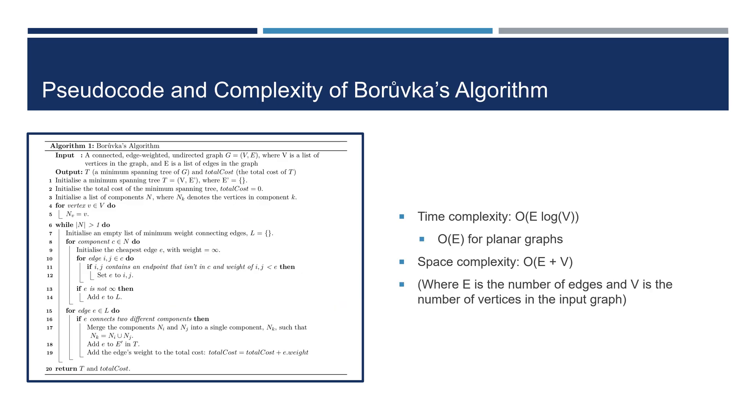Borůvka's algorithm has a time complexity of O(E log V). The outer while loop runs for log V iterations, as each one reduces the number of components by at least a factor of two. In each loop, it goes over a component's edges to find its minimum weight connecting edge in O(E) time. It then checks the minimum connecting edges and adds them to the MST if they connect two different components, which also takes O(E) time.